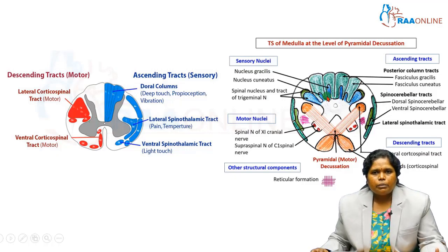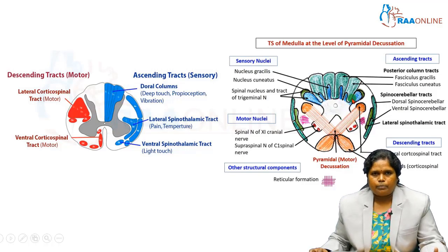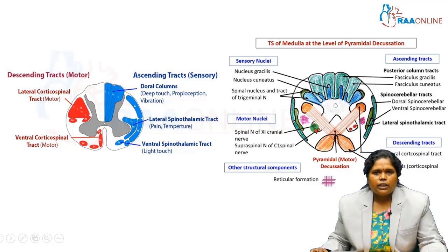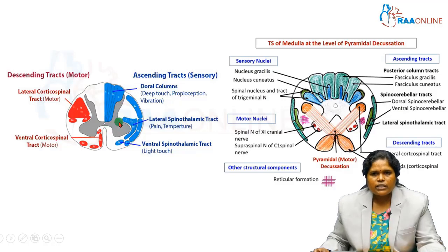But here in the pyramidal decussation, see the gray matter — it is not like in the spinal cord. It does have the central canal, but the surrounding gray matter is not in the shape of a butterfly. The dorsal horn especially will have three projections instead of a single projection — you can see three projections on either side. The anterior gray column is also detached by some decussating fibers. This is the main difference you should understand here — the changes in the gray matter.